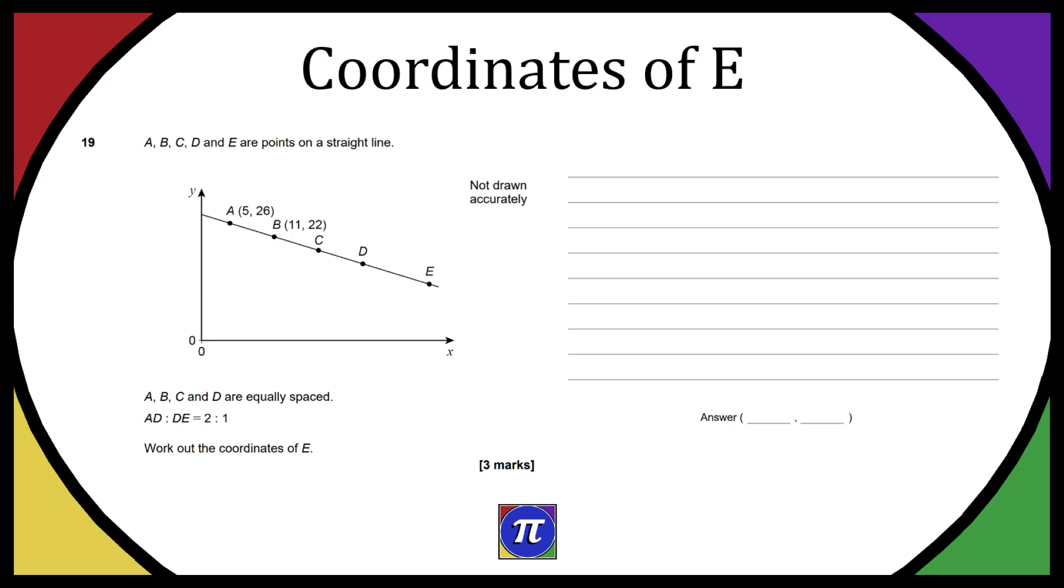So one thing that stands out to me that will make this question a lot easier is that A, B, C and D are equally spaced. So if we work out how to get from A to B, we can apply that to get from B to C and C to D. That's because they're all equal distance apart and they're on a straight line, so they're going in the same direction.